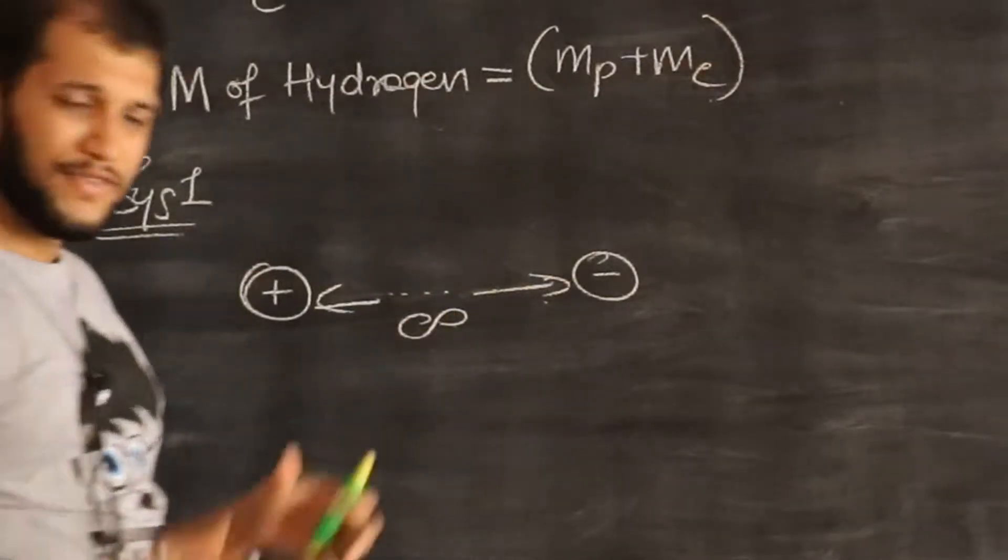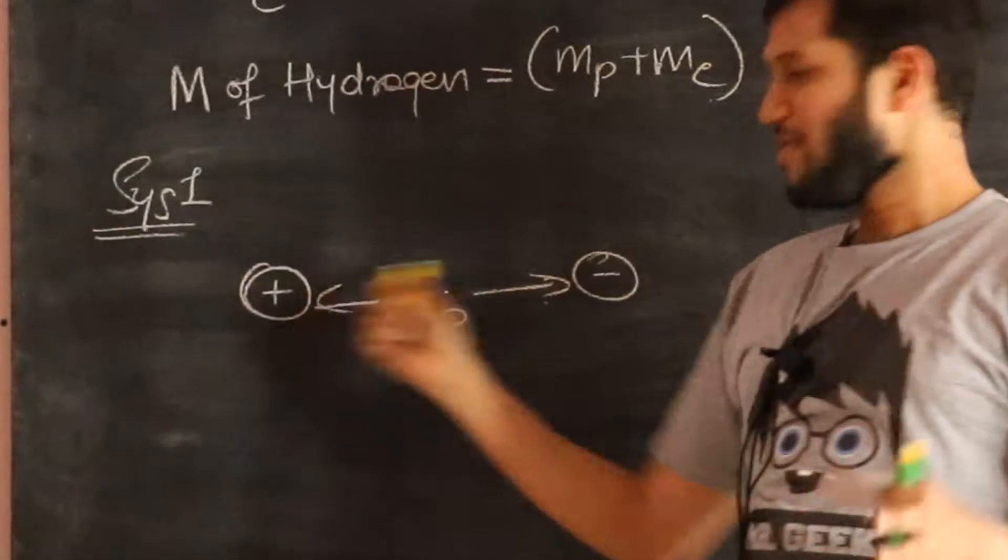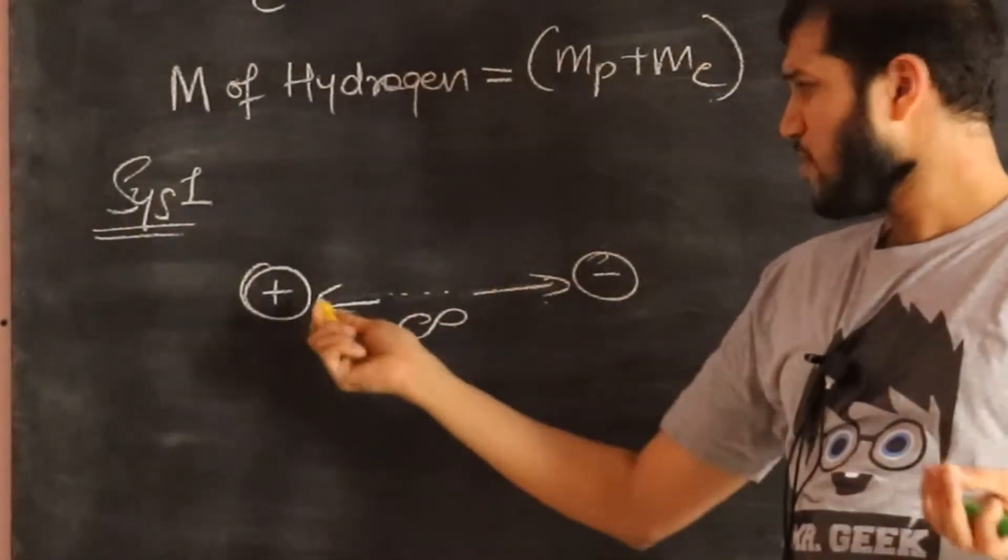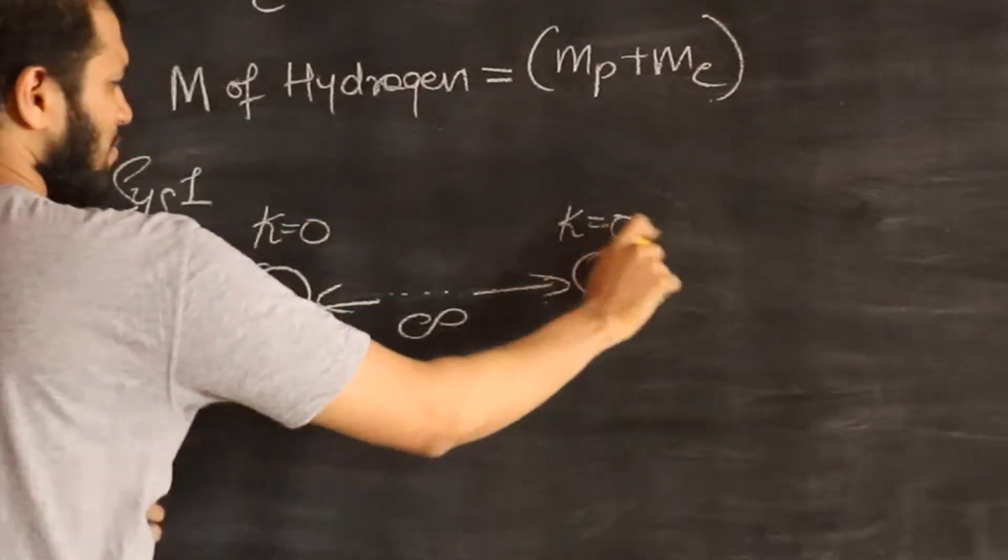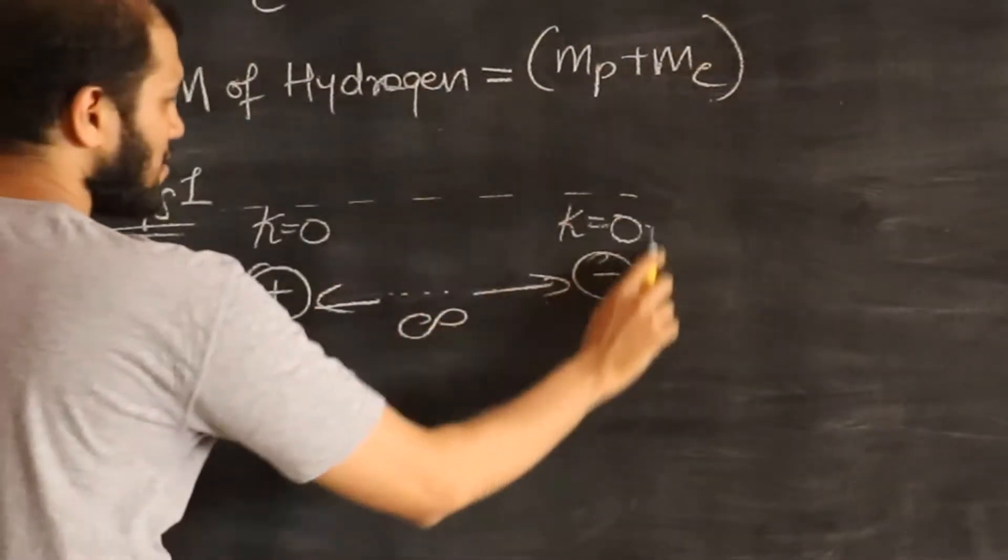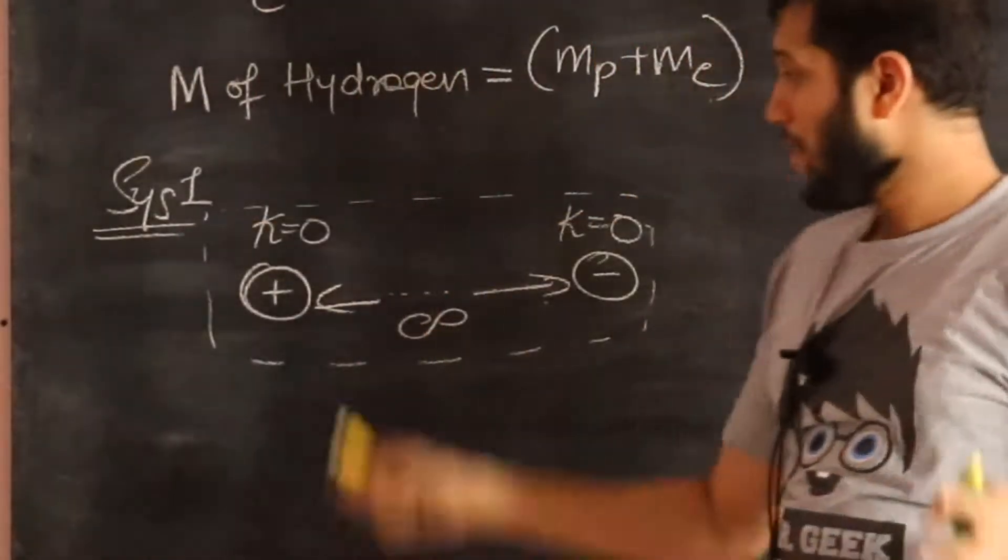So infinitely far away. If they are infinitely far away, they are not going to influence anyone with their electric fields. And let's also assume that their kinetic energy is zero. So K is zero, and K is zero. I could now ask you, what is the mass of this system?